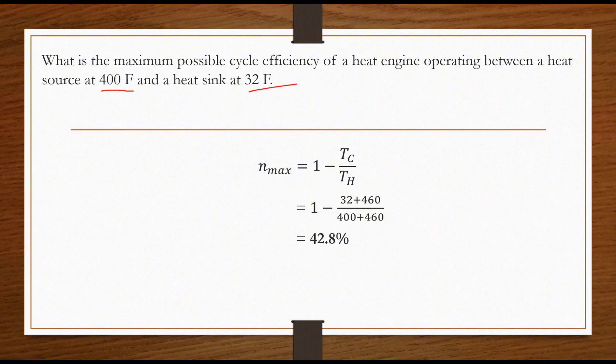We have the result of 42.8%. So, this is the efficiency or the maximum efficiency of a cycle. So, this is our answer.